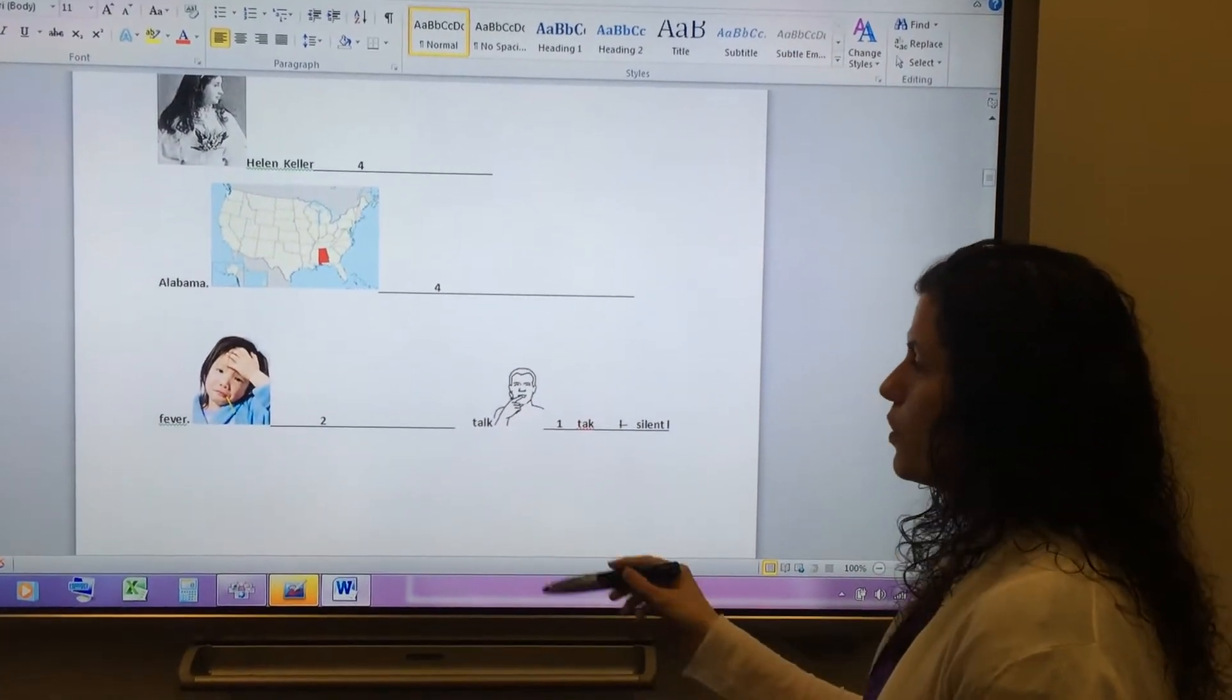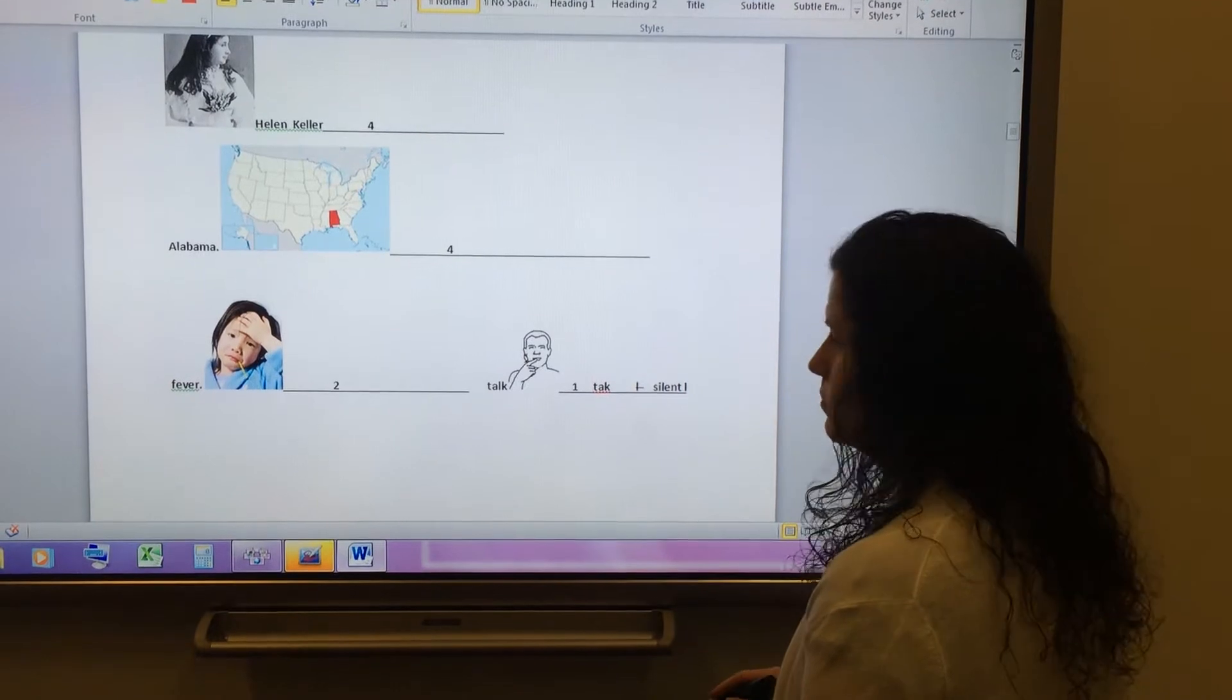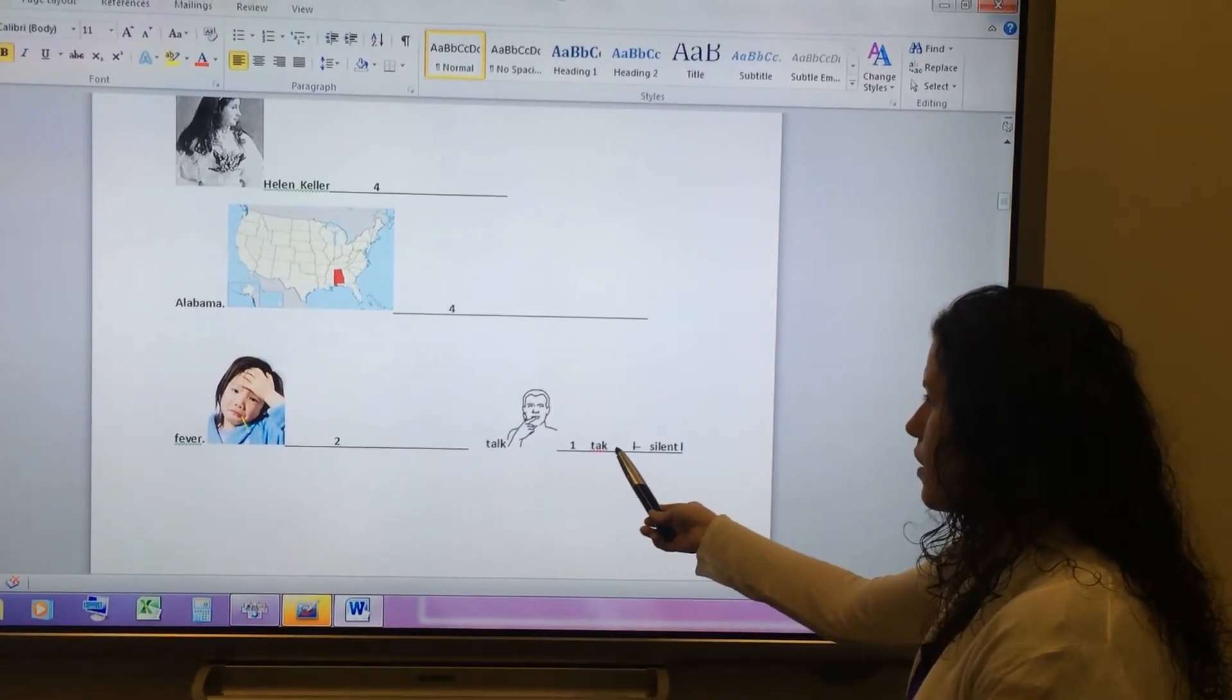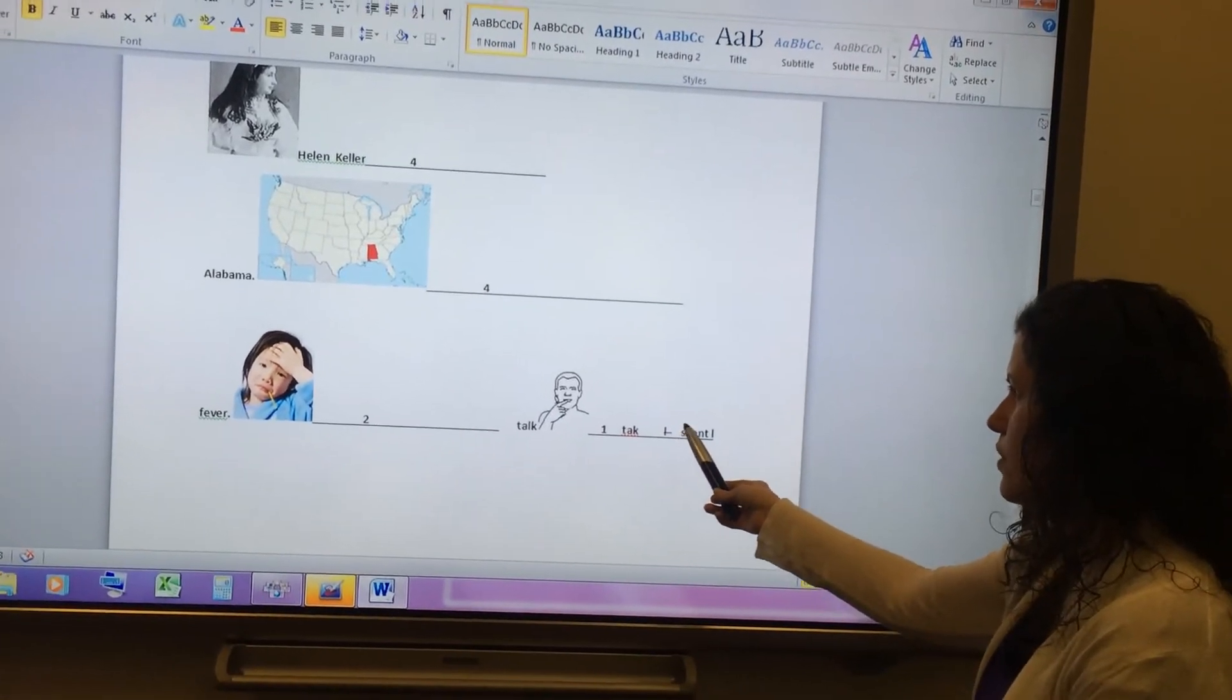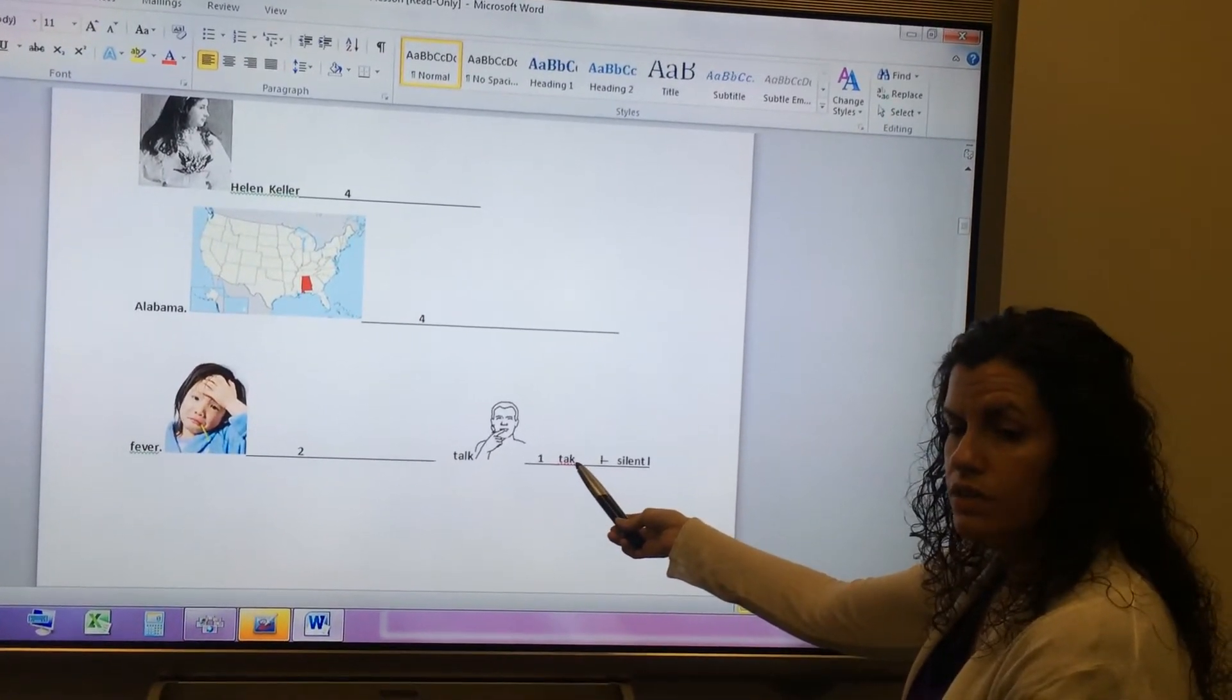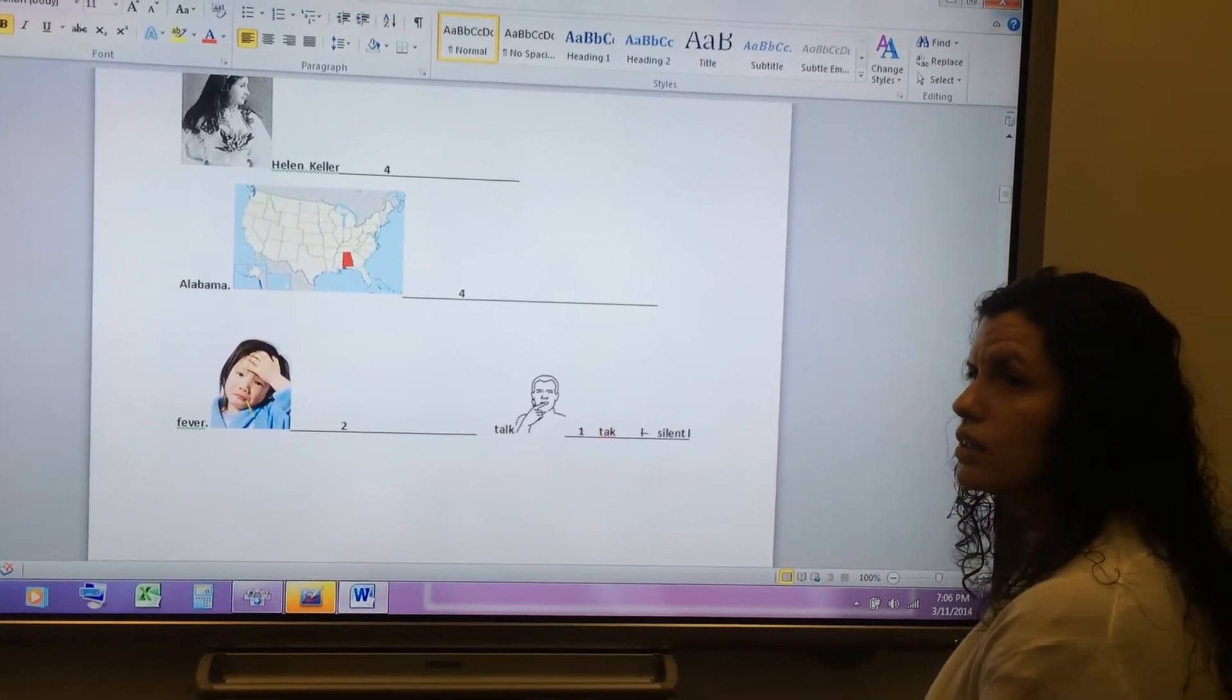Here we have the word fever. Two E sounds. Fever. Here, the word is talk. Talk. One vowel, one syllable. Here I did a couple of additional notes. I crossed off the L. You can do that or you can put silent L. And I also spelled it without the L, which is called phonetic spelling. You can do any of these to help your pronunciation. Again, the word is talk. Short A sound.